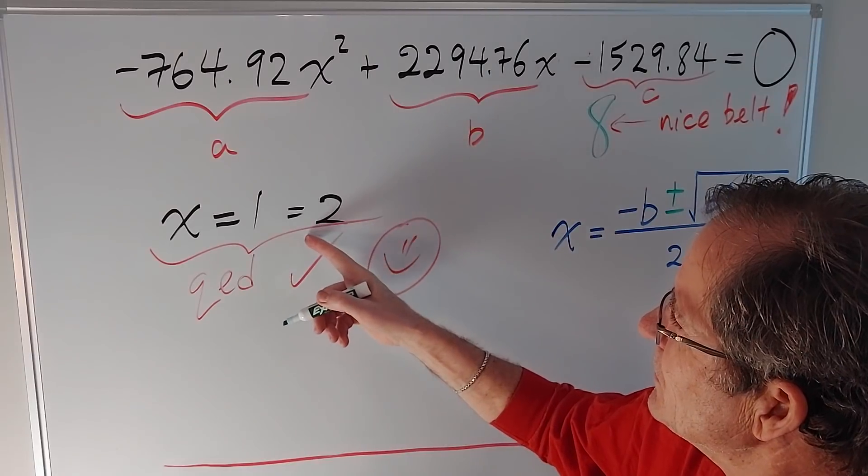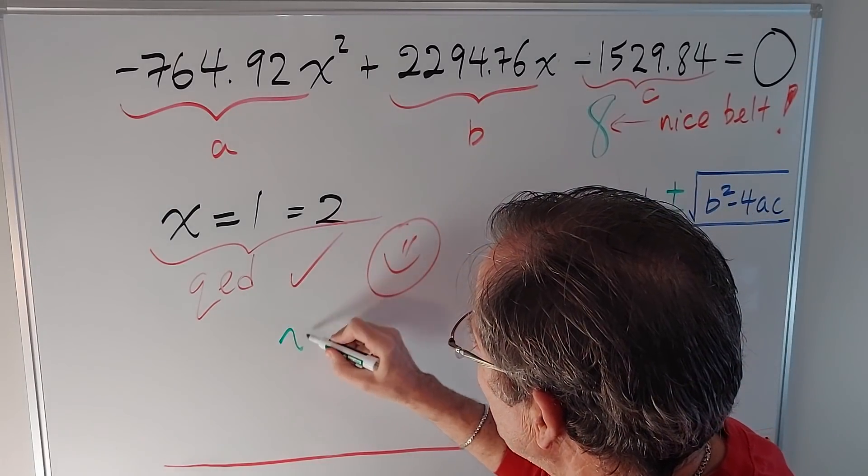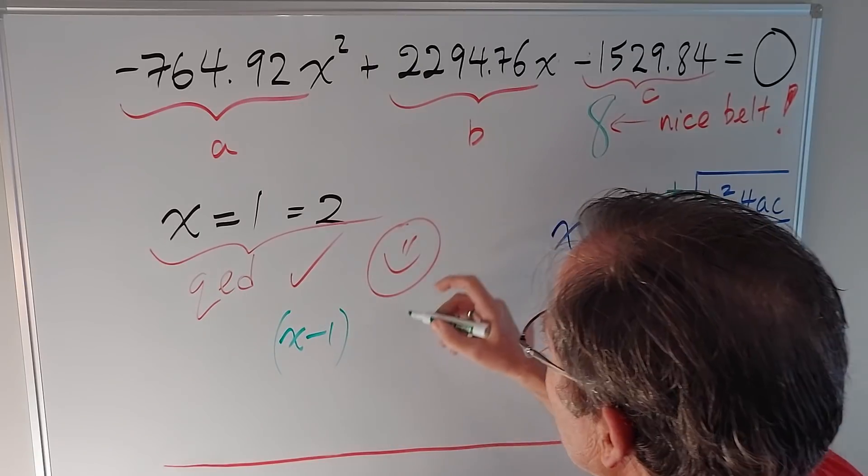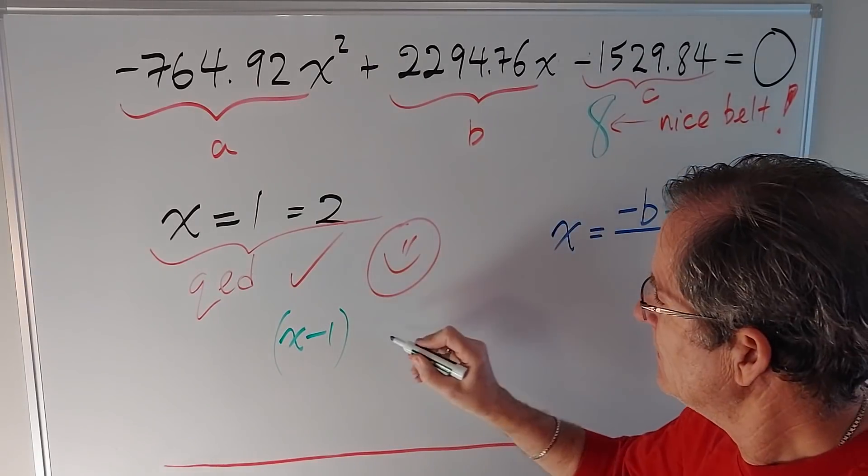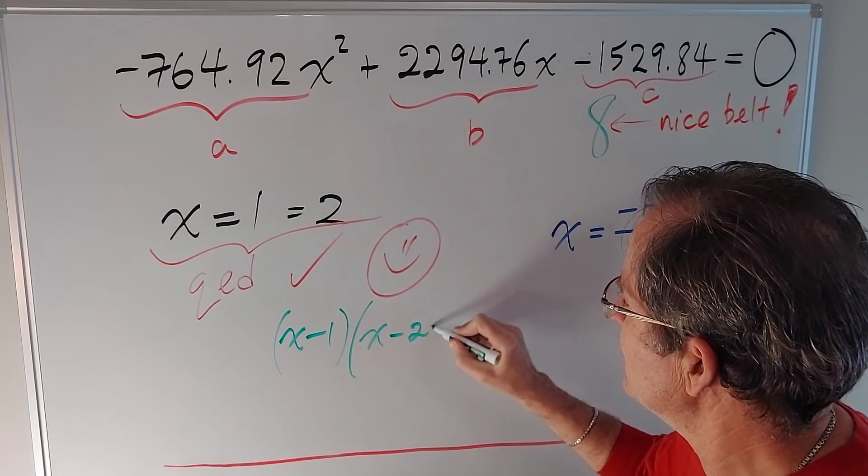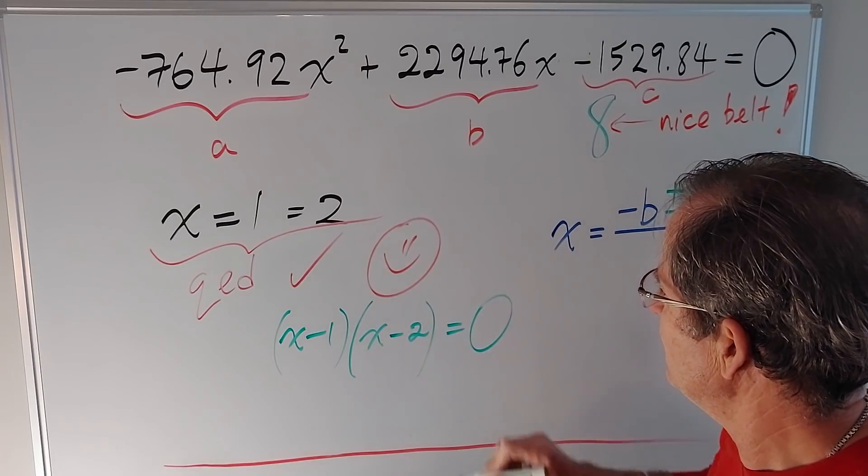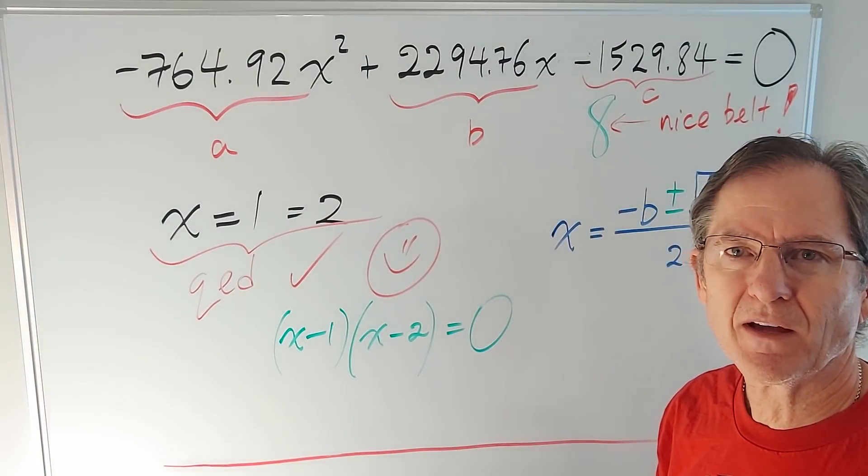So what do those solutions mean? Well, it means that x minus 1 is a factor of this equation. x minus 2 is another factor of that equation, which of course equals, guessed it by now, big fat zero.